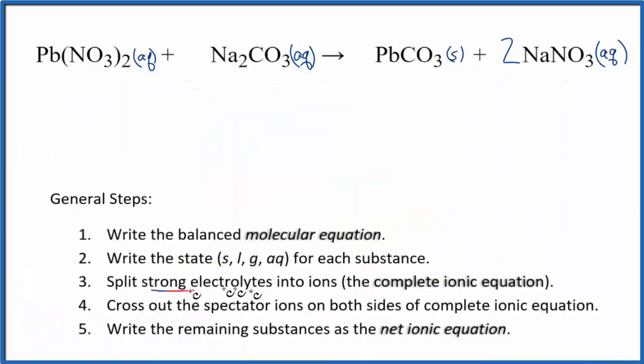So now we can split the strong electrolytes into their ions. And this will give us the complete ionic equation, sometimes called the total ionic equation. So lead, we really don't know what that is. It's a transition metal, so it can have different ionic charge. But nitrate, that always is a 1 minus. You can look that up on a table of ions.